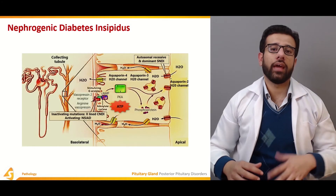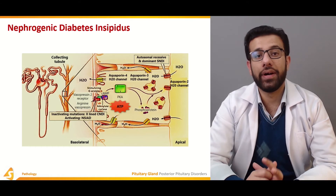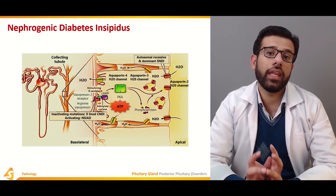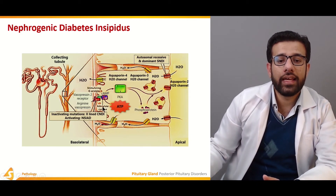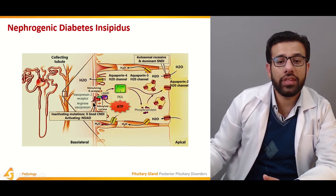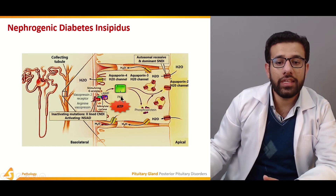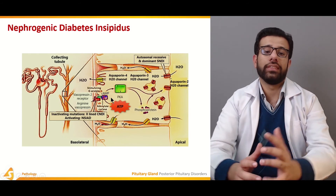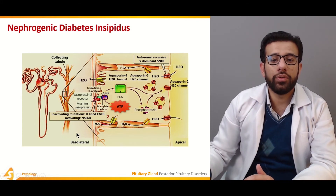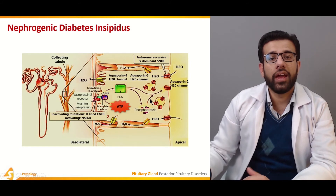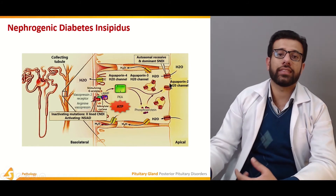The other type is nephrogenic diabetes insipidus. In nephrogenic diabetes insipidus, there is no central involvement; the main pathology is that the receptors — specifically the aquaporin-2 water channels and certain vasopressin receptors (vasopressin being another name for ADH) — are affected. There is downregulation or resistance of these receptors, which contributes to nephrogenic diabetes insipidus and results in excessive urination.